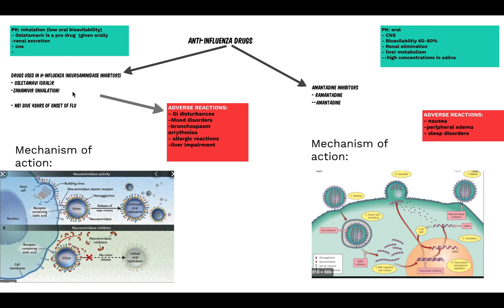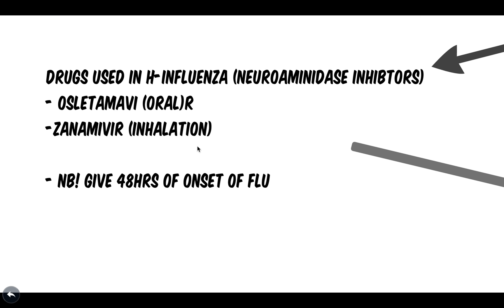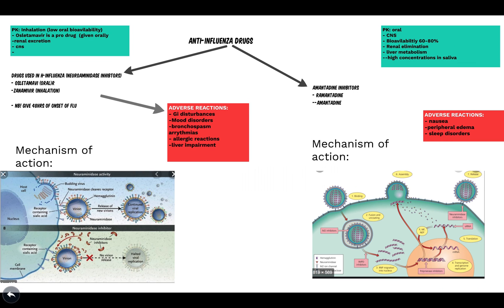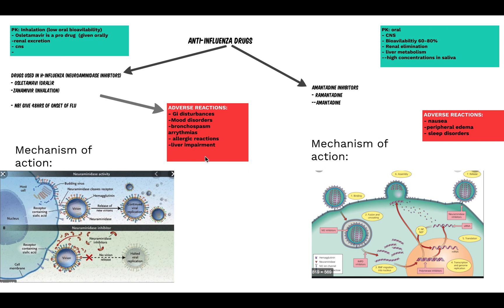Examples of neuraminidase inhibitors are oseltamivir and zanamivir. Oseltamivir is taken orally and is a prodrug, whereas zanamivir is administered by nasal spray. Note that these drugs should be given within 48 hours of onset of the flu to be effective. Adverse reactions include mood disorders, bronchospasm, arrhythmias, allergic reactions, and liver impairment.